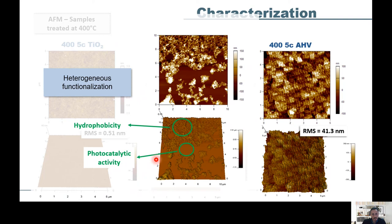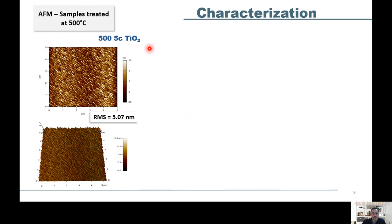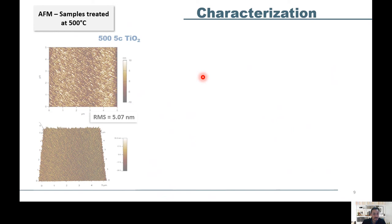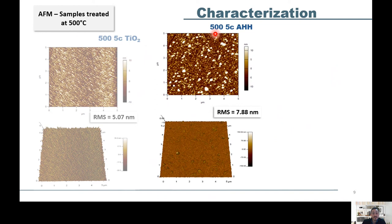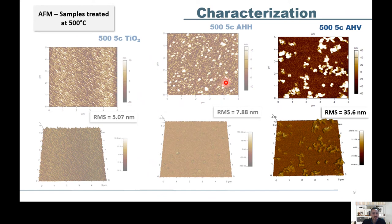These characteristics are important for the film to present the hybrid character of hydrophobicity associated with photocatalytic activity. The roughness of the titanium dioxide films and also those modified with hydroxy agent calcined at 500 degrees Celsius were rougher due to the increased crystallinity of the anatase phase present. The film modified with vinyl agents also showed that heterogeneous functionalization occurred, but with a greater number of exposed portions of titanium dioxide.